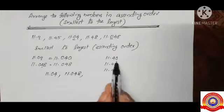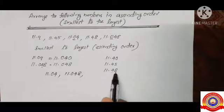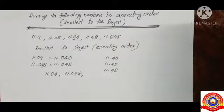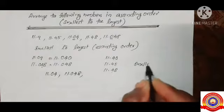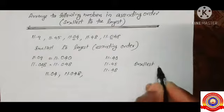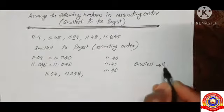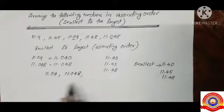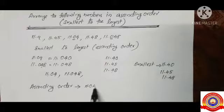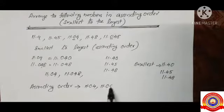So the numbers in ascending order are: 11.04, 11.048, then from the group of 11.40, 11.45, and 11.48, we arrange them in order.